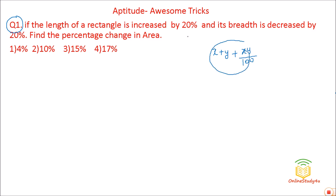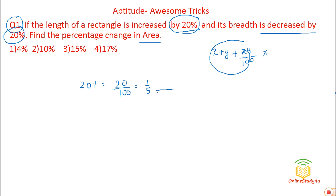Many people know the formula x plus y plus xy by 100, but if you have more than two data points, that formula will not work. Question 1: If the length of a rectangle is increased by 20% and its breadth is decreased by 20%, find the percentage change in area. Now, 20% means 20/100, which is 1/5. So if the length was 5, it increases by 1 to become 6.